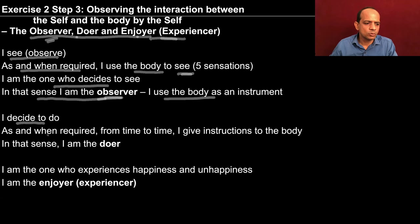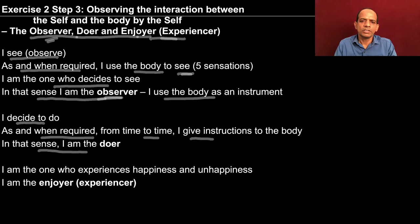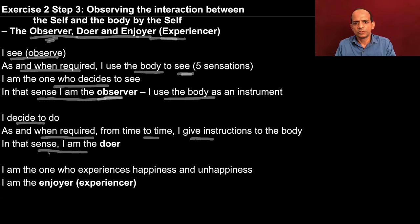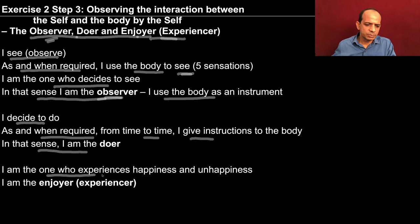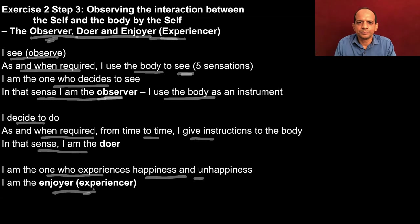Similarly, I decide to do as and when required — I give instructions to the body, and in that sense I am the doer. Doer essentially means I am the decision maker to do or not to do, and the body acts accordingly. I am also the one who experiences happiness or unhappiness — I am the enjoyer, not the body. The body merely has sensation; the sensation reaches me and I taste it, calling it pleasant or unpleasant.